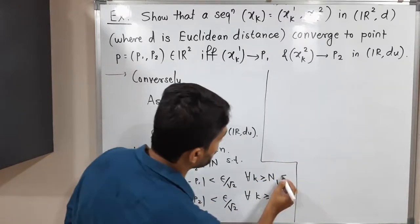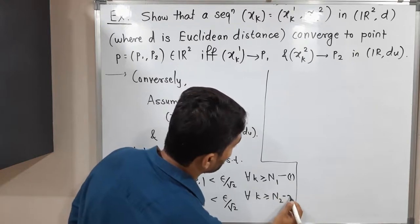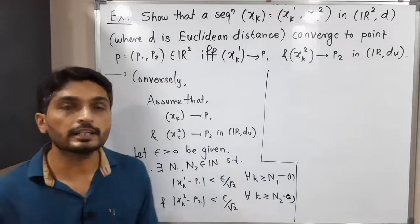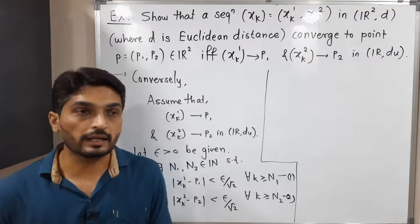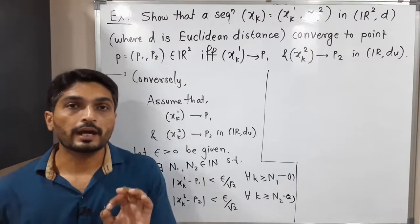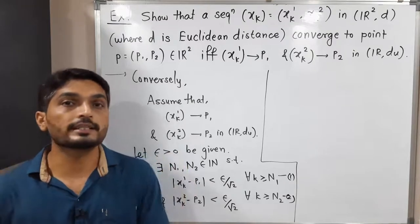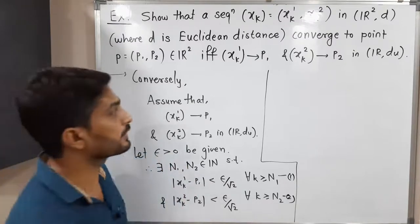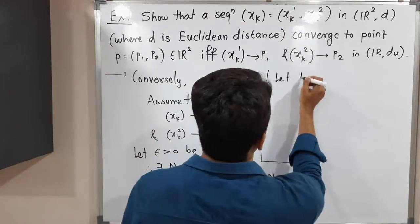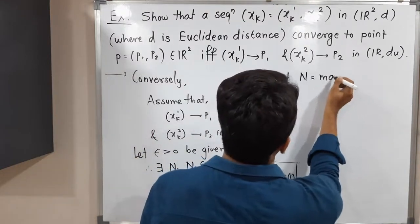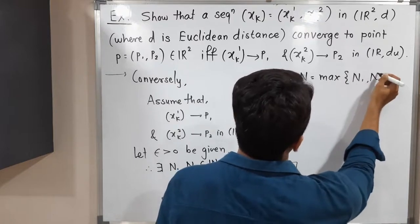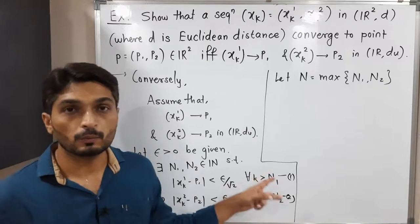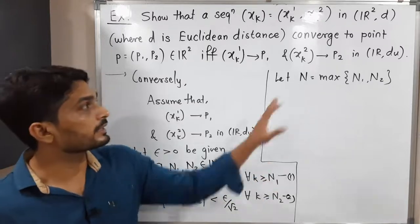Inequality (1) is true for k greater than or equal to N1, and inequality (2) is true for k greater than or equal to N2. Since we need to use both inequalities simultaneously, we take N equal to the maximum of N1 and N2. Let N = max(N1, N2), so that both inequalities (1) and (2) hold for all k greater than or equal to N.